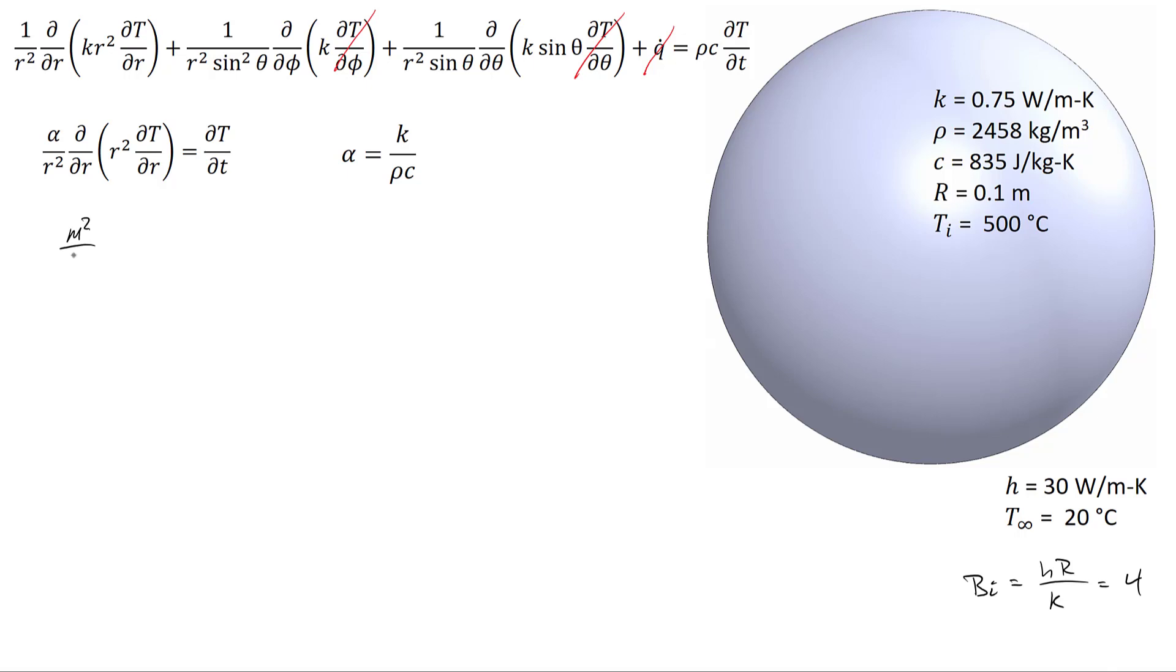Let's take a moment to check the units. Alpha has dimensions of meters squared per second. 1 over R squared is 1 over meters squared. The partial also has dimensions, so 1 over meters for d/dr, meters squared for R squared, and finally Kelvin per meter for dT/dr. If we simplify these units, we'll find that the left hand side has dimensions of Kelvin per second, and that's congruent with the dimensions of the right hand side.